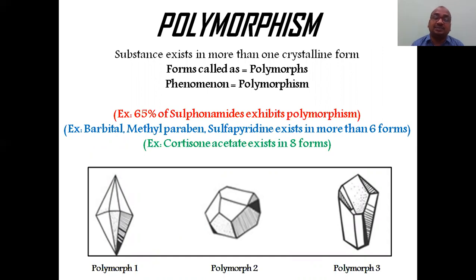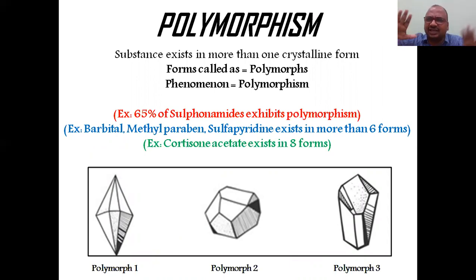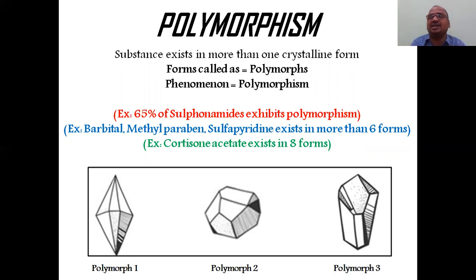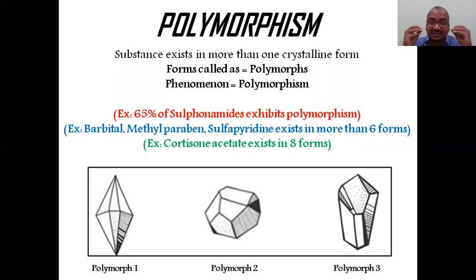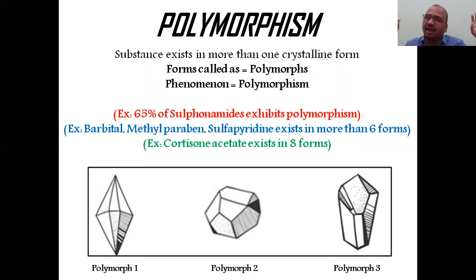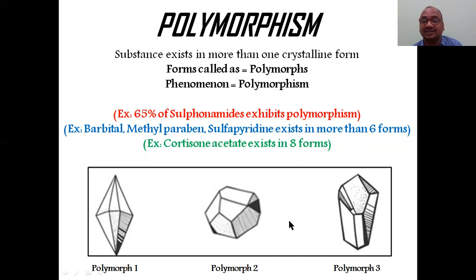Polymorphism: a substance exists in more than one crystalline form. There are many types of crystalline structures — cubic, rhombohedral, tetragonal, and others. If any substance exists in more than one crystalline form, the phenomenon is called polymorphism. The drug particles exist in more than one crystalline form — each individual form is called a polymorph.